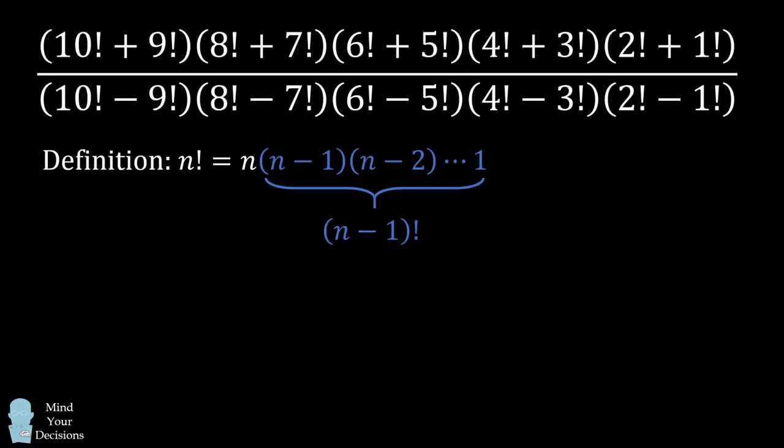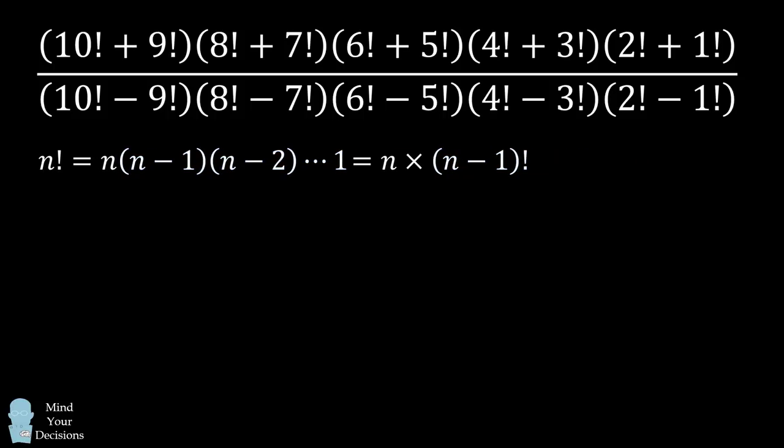So we can also write that n factorial is equal to n times n minus 1 factorial. This will be a useful form that we can use to simplify the problem.